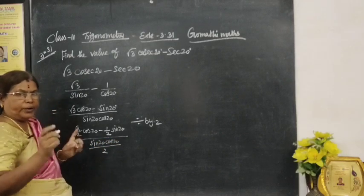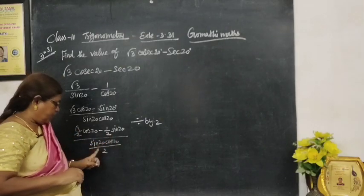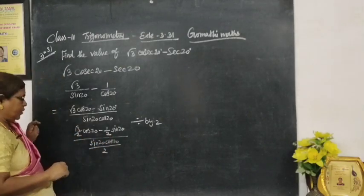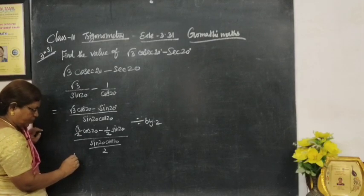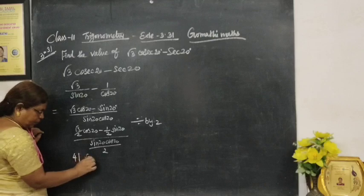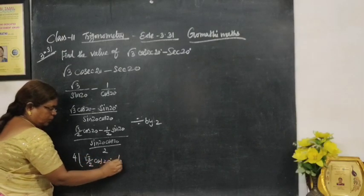Each term you are dividing by 2. This term you are dividing by 2. Now divide by 2 cos 20°. Multiply and divide by 4. Multiply and divide by 4. √3/2.